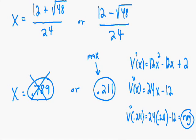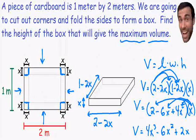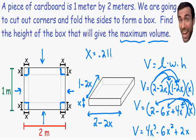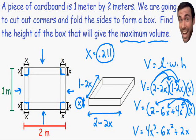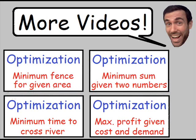The question asks us to find the height of the box that gives the maximum volume. We know that x = 0.211 gives the maximum volume, and the height of the box equals x. So the answer is height = 0.211 meters. I hope this video gave you a better idea of how to perform optimization problems. Links to four other optimization examples are on screen — thank you for watching!